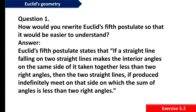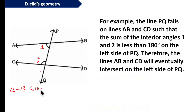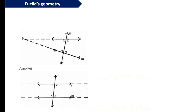We can rewrite it like this: line PQ falls on lines AB and CD such that the sum of interior angles 1 and 2 is less than 180 degrees on the left side of PQ. Therefore, lines AB and CD will eventually intersect on the left side of PQ. When angle 1 and angle 2 add up to less than 180 degrees, the lines intersect on that side.